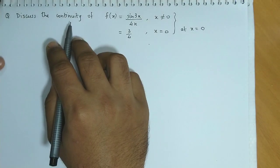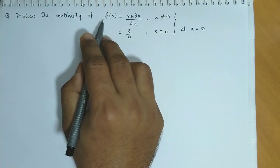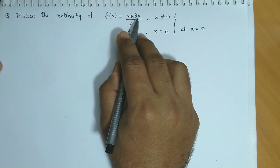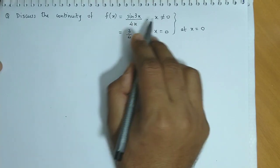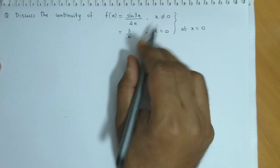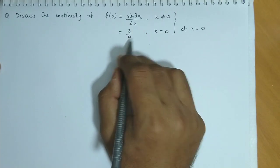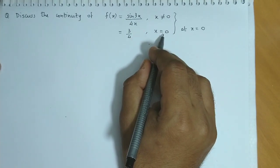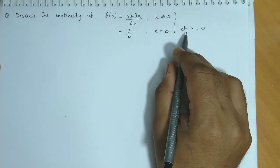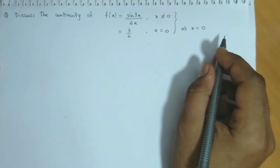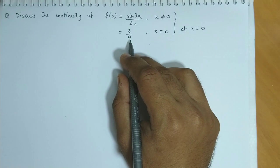An example based on continuity. Discuss the continuity of f(x) given by sin 3x upon 4x for x not equal to 0, and it is equal to 3 by 4 when x is equal to 0. We have to discuss continuity at x equal to 0. So we will use continuity here.